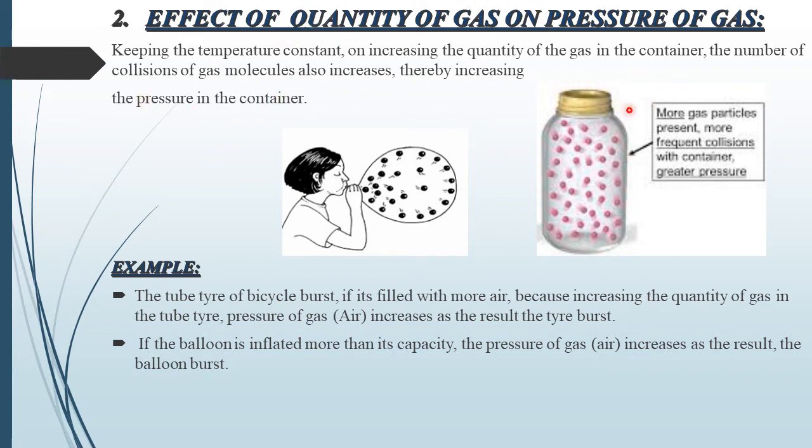The number of collisions of gas molecules also increases thereby increasing the pressure in the container. When quantity of gas is increased and temperature constant rakhein, mass increase ho to pressure bhi increase hota hai. The tube tire of a bicycle burst if it's filled with more air because increasing the quantity of gas in the tube tire, pressure of gas or air increases as the result the tire burst. If the balloon is inflated more than its capacity, the pressure of the gas increases as the result the balloon burst. Yani agar balloon mein bhi uski capacity se zyada hawa bharein to woh burst kar jata hai.